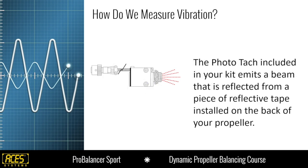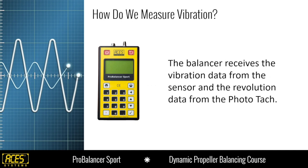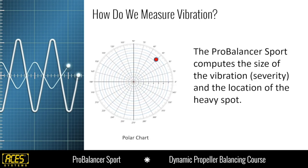The photo tach, which is included with your kit, emits a beam that's reflected from a piece of reflective tape installed on the back of your propeller. Every time that reflective tape passes, it sends a signal back, and that's how it senses the speed — the RPM. After the balancer receives vibration data from the sensor and revolution data from the photo tach, the balancer computes the size of the vibration and the location of the heavy spot — how bad the vibration is and what angle it's located at.